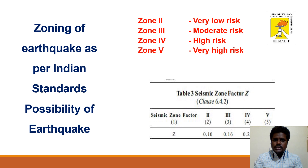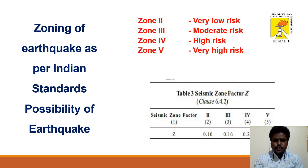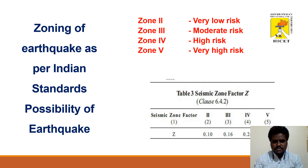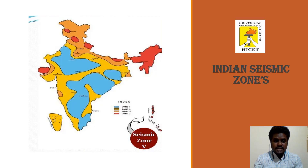Zone II is a very low risk area, Zone III is a moderate risk area, Zone IV is a high risk area, and Zone V is also a very high risk area. As per the design criteria clause 6.4.2, the seismic zone factor Z values are 0.10, 0.16, 0.24, and 0.36 for zones II through V respectively. Zone V, shown in red on the seismic zone map, is the highest risk area in India.